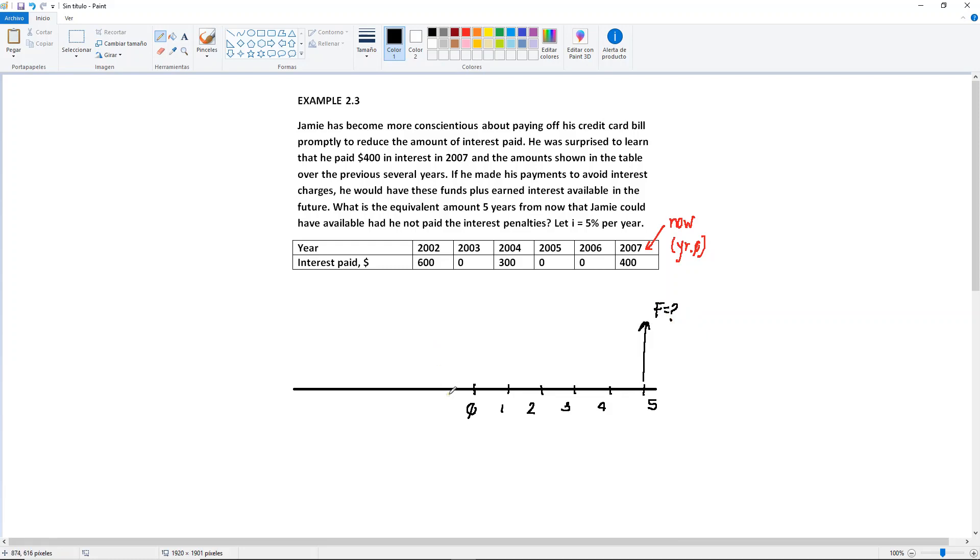But in 2007, Jamie had to pay $400. So I'm going to draw the arrow going down. $400. Then, let's go backwards. We have one, two, three, four, five years. So it's one, two, three, four, and five.